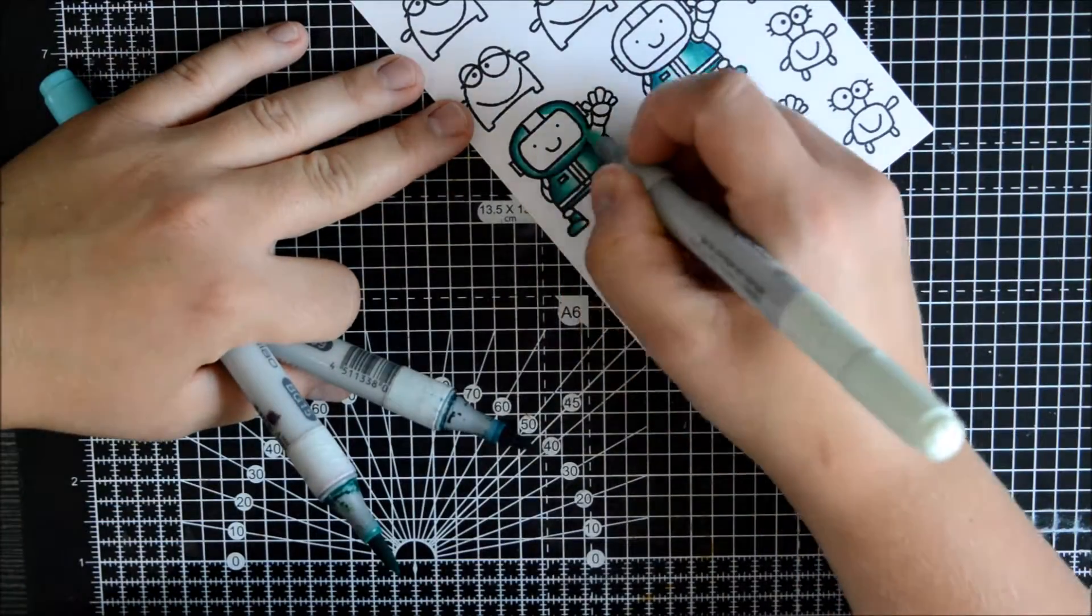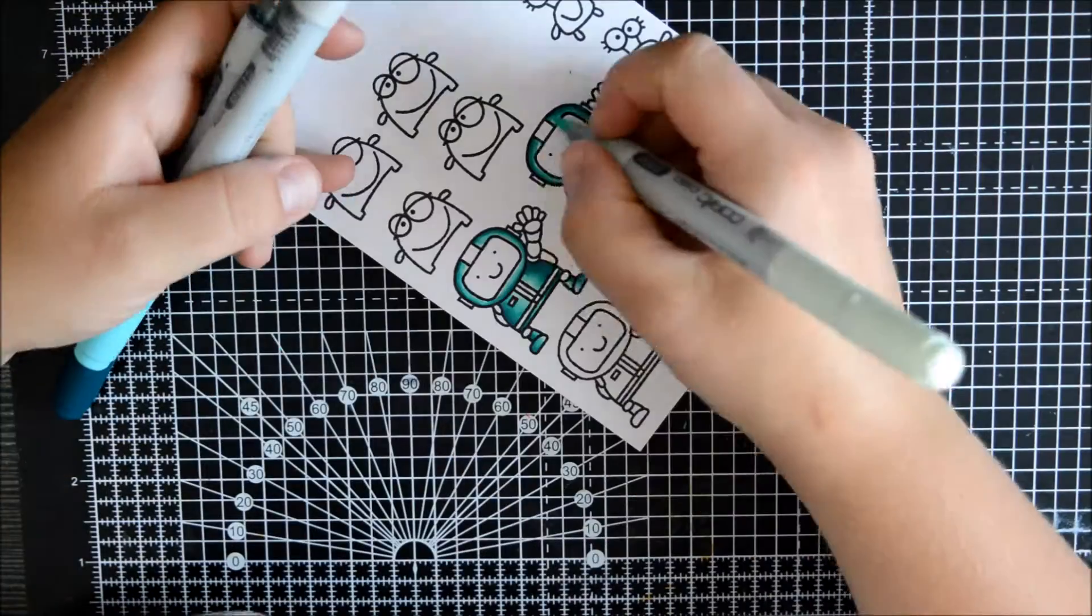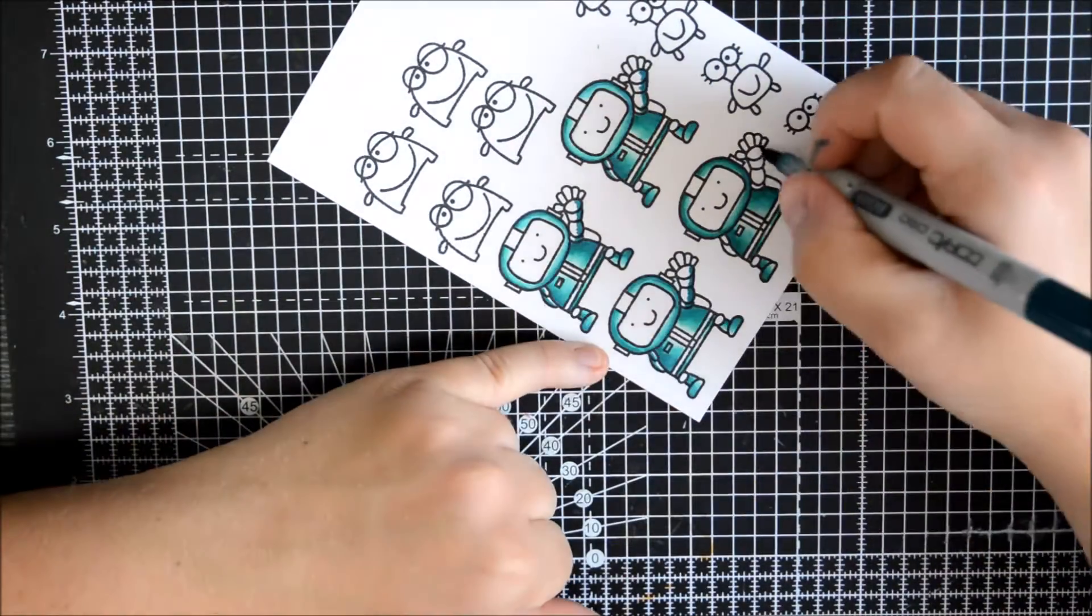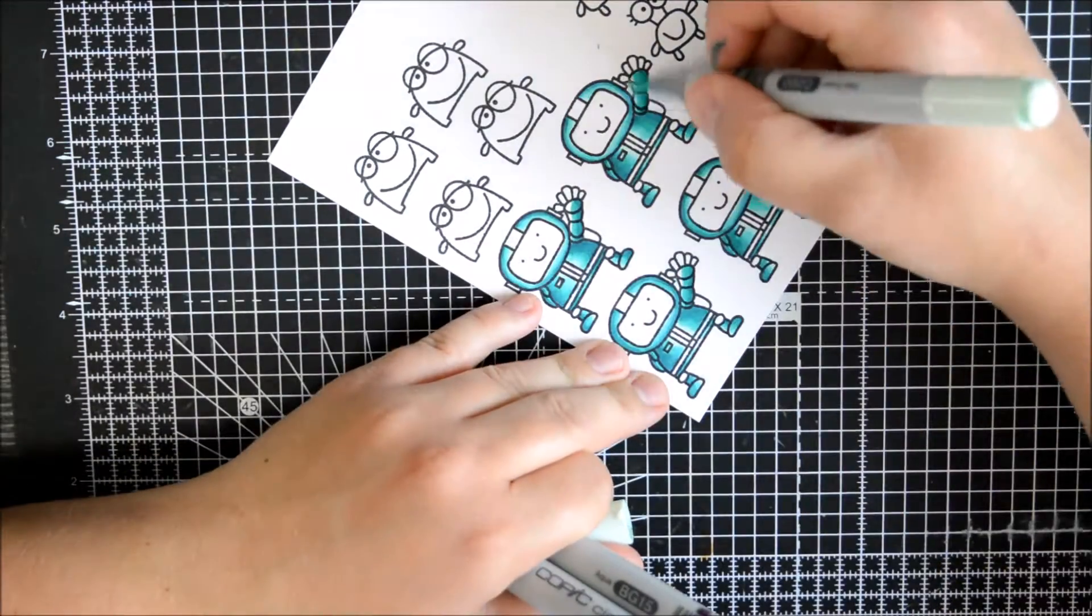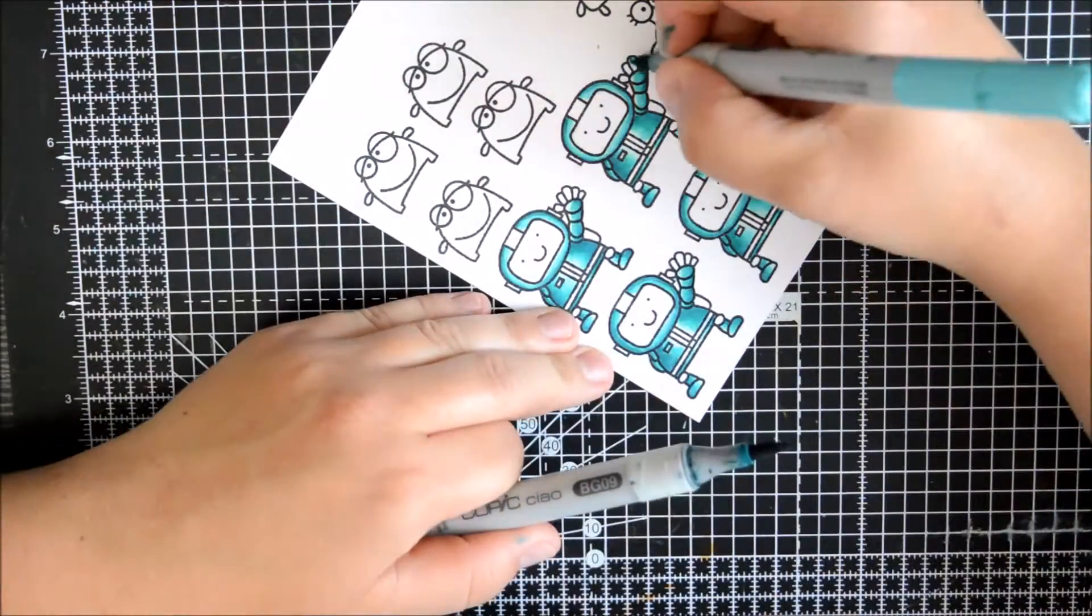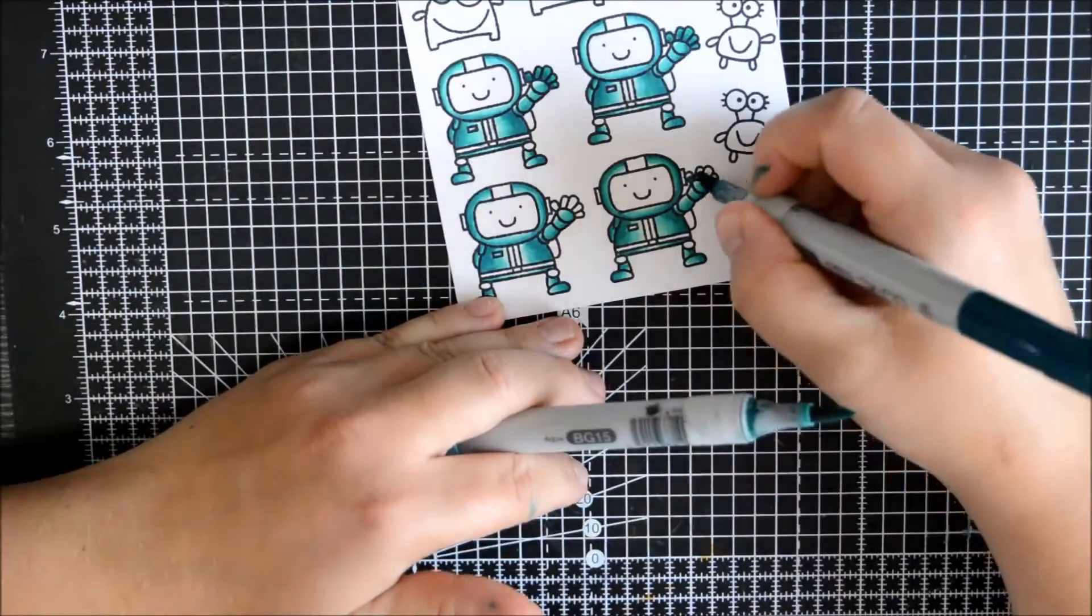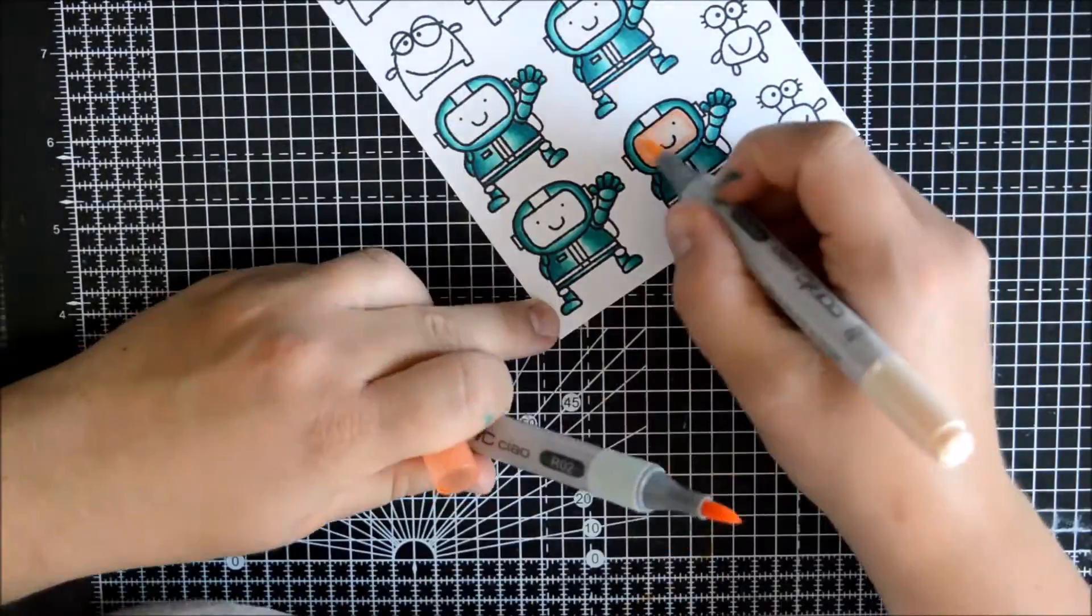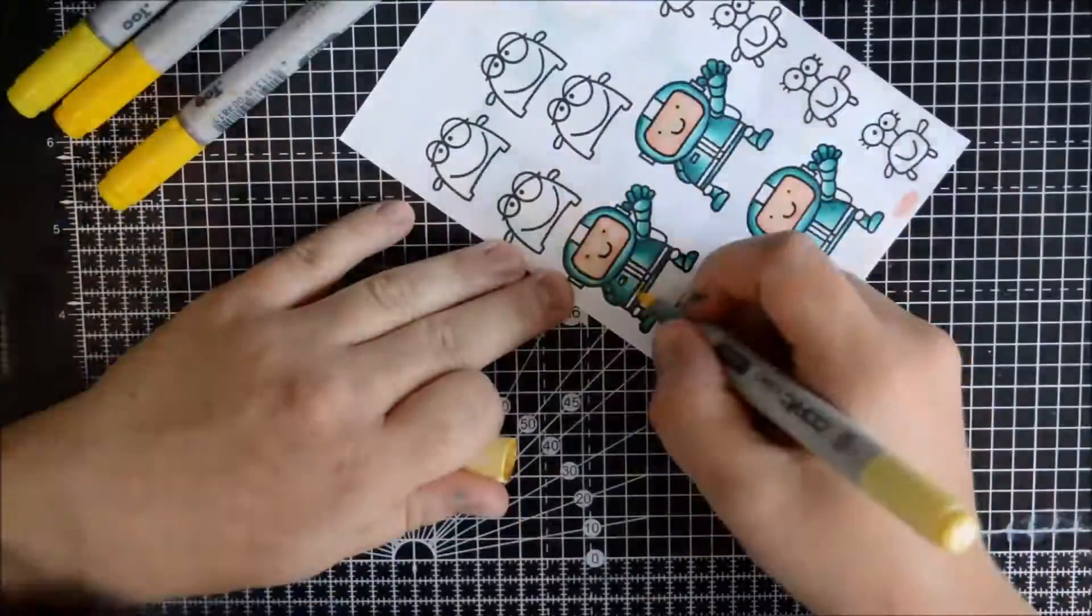Once I was done with all the coloring, I did some fussy cutting for most of them. Not for the robot ones, because the lines are too fine and I could really have done with some dies there. But I don't have them, so I just cut around them and left a little border. But for the other ones, I did some fussy cutting and it worked out fine. I placed them onto a little piece of card in a shaker envelope.